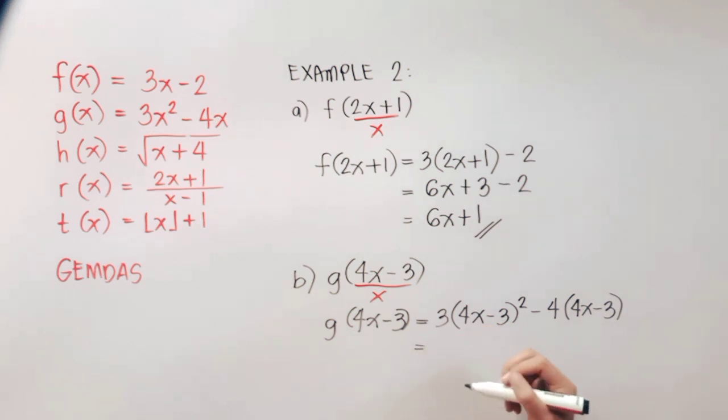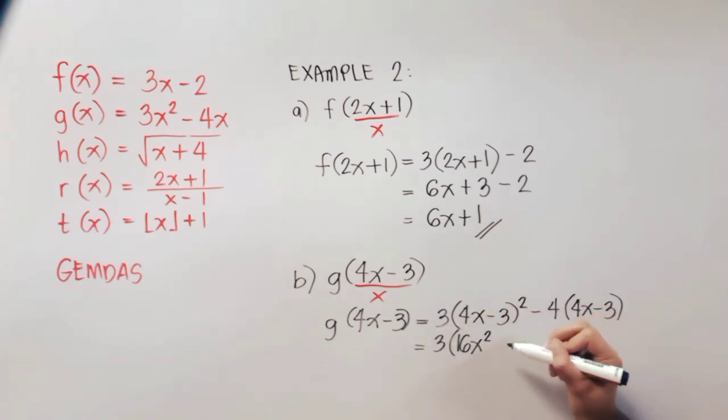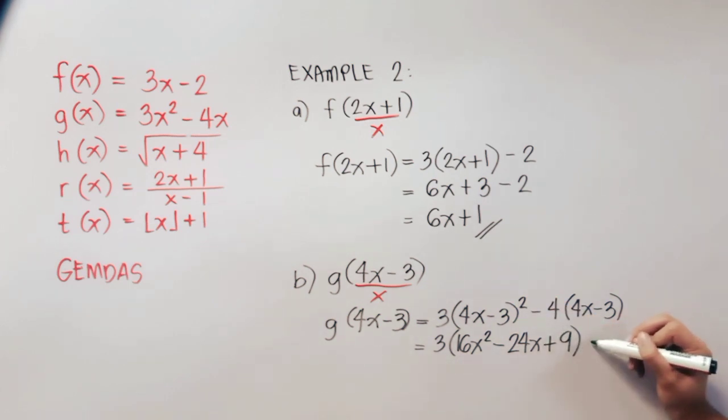Since we have here an exponent of 2, that is 4 raised to 2 is 16, x raised to 2 is x squared. And then 4 times negative 3, that's negative 12 times 2, that's negative 24x. Just add x, negative 3 squared, that is positive 9. And then negative 4 times 4x, that's negative 16x. And then negative 4 times negative 3, that's positive 12.